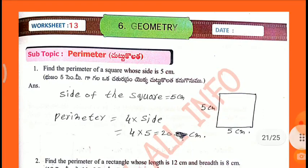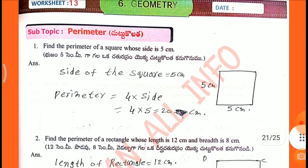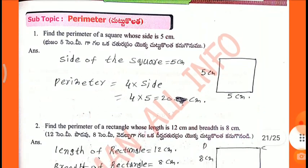Worksheet No. 13. Find the perimeter of a square whose side is 5 cm. The side of the square equals 5 cm. Perimeter equals 4 into side — 4 into 5 equals 20 cm.